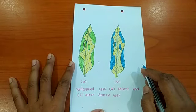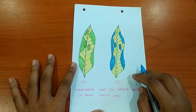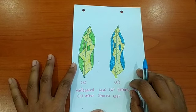Hello everyone, in this video we are going to learn about the activity variegated leaf before and after the starch test. This activity belongs to the textbook of class 10th chapter 6 life processes.